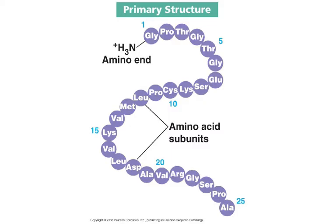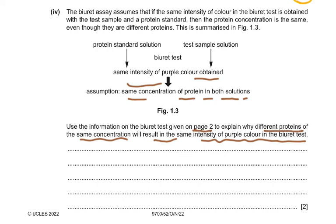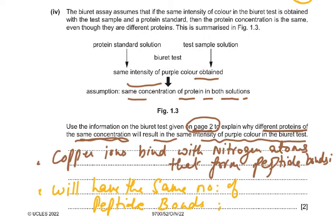Going back to the question: explain why different proteins of the same concentration will have the same intensity of purple color. The reason is that the copper ions bind with the nitrogen atoms that form the peptide bonds. In this paper you can use the wording of the question and get a mark, because you've been able to comprehend that part of the question. The two proteins will have the same number of peptide bonds — that is why you get the same intensity of purple color. So: copper ions bind with nitrogen atoms that form peptide bonds, and both proteins have the same number of peptide bonds.